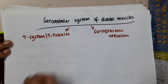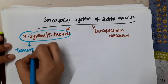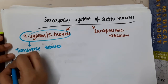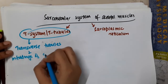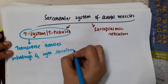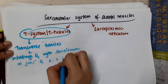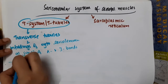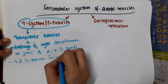The T-tubules contain transverse tubules. These transverse tubules are actually the infoldings of the cell membrane, or sarcolemma, at the junction of the A and I bands. There are two T-tubules present in each sarcomere.